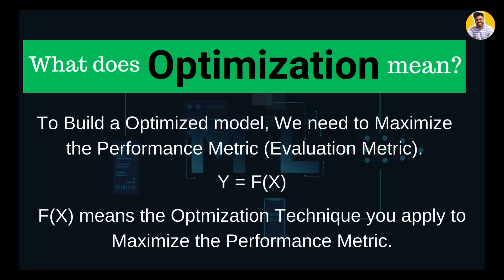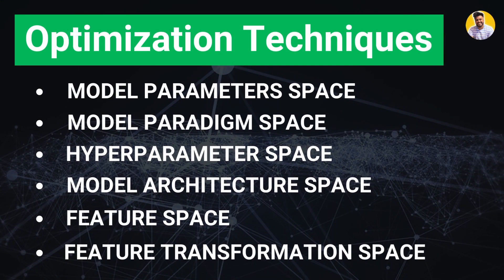I use these six techniques to optimize my machine learning algorithms: model parameter space, model paradigm space, hyper parameter space, model architecture space, feature space, and feature transformation space. By using these techniques you can make your model good, and you can achieve maximum accuracy by utilizing these techniques efficiently.